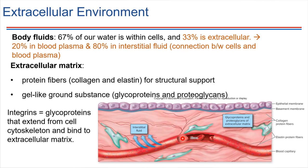This extracellular environment also provides a means by which cells can communicate with each other. One cell might secrete some sort of a chemical regulator or messenger molecule, and then that molecule can travel through the extracellular space and make its way over to another cell. So this extracellular space is allowing communication to take place.